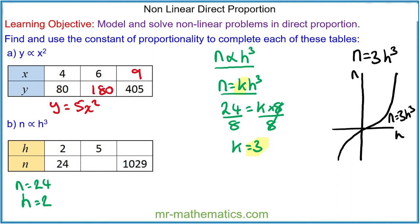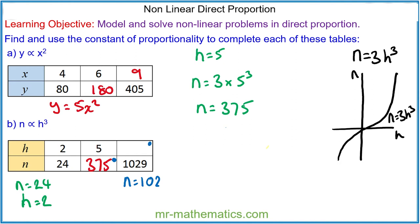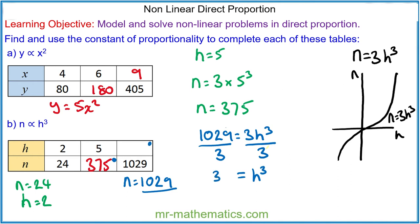We can use this model to find the value of n when h equals 5, and the value of h when n equals 729. When h is equal to 5, n is equal to 3 times 5 cubed. For the second part, we substitute into our model: 729 is equal to 3h cubed. We divide both sides by 3, so h cubed is equal to 243. We cube root both sides, so h is equal to 7.